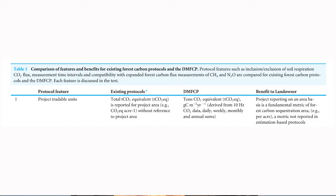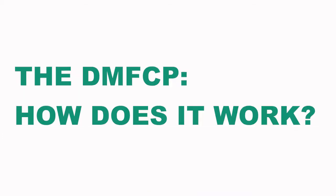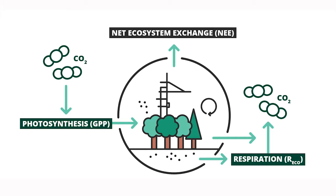We identified 25 differences between estimation-based protocols and the DMFTP, including, importantly, uncertainty for both approaches. The primary feature of the DMFTP operation is direct measurement of CO2 flux in the forest, using the eddy covariance method to determine net ecosystem exchange, or NEE.